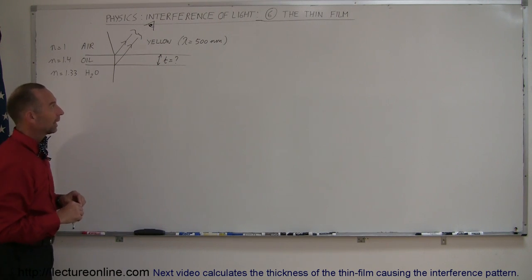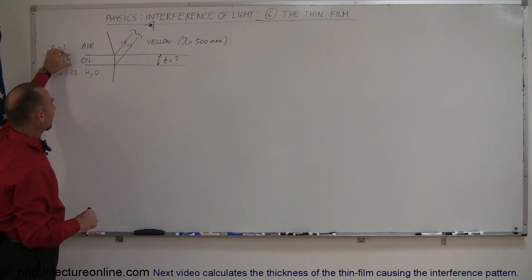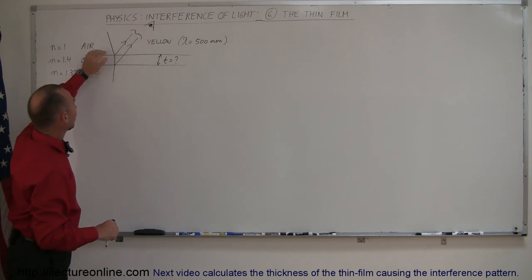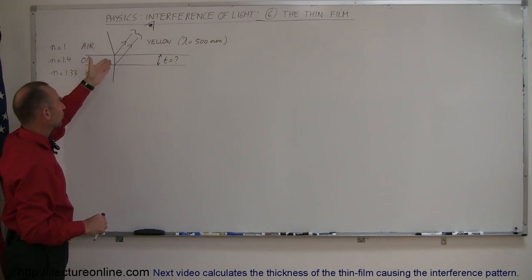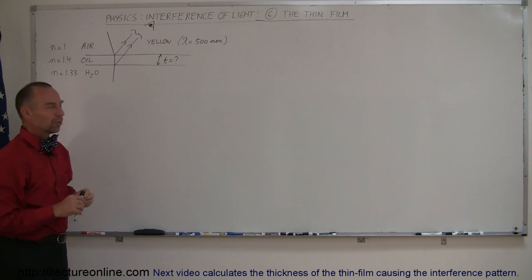And here's another example of the thin film. In this case we have like a puddle of water, and on top of that there's a thin layer of oil and there's air above there. Light is shining onto the puddle.